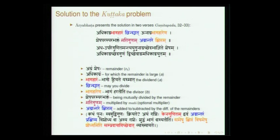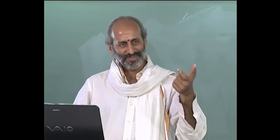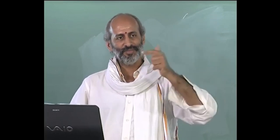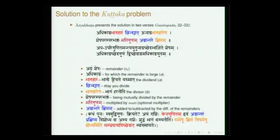Suppose a is adhikagra, b is unagra. You divide a by b: q is the first quotient and r1 is the remainder. You again divide b, getting r2 as the next remainder. You keep doing this. This is what is referred to by Aryabhata as sesha paraspara bhaktam — the previous remainder becomes the dividend and the divisor becomes the dividend in the next stage. You have to do it continuously.